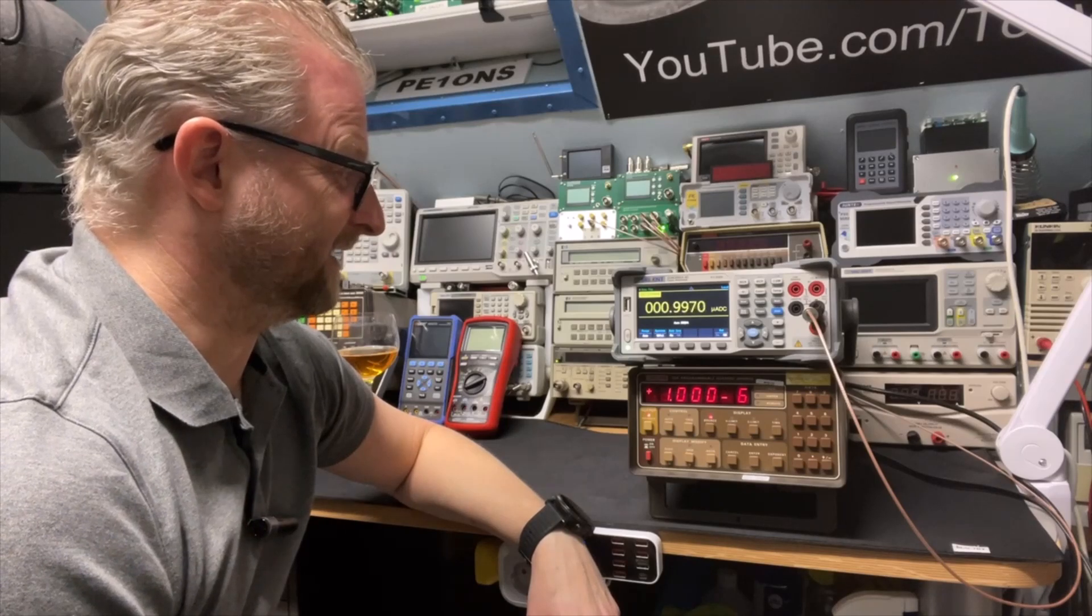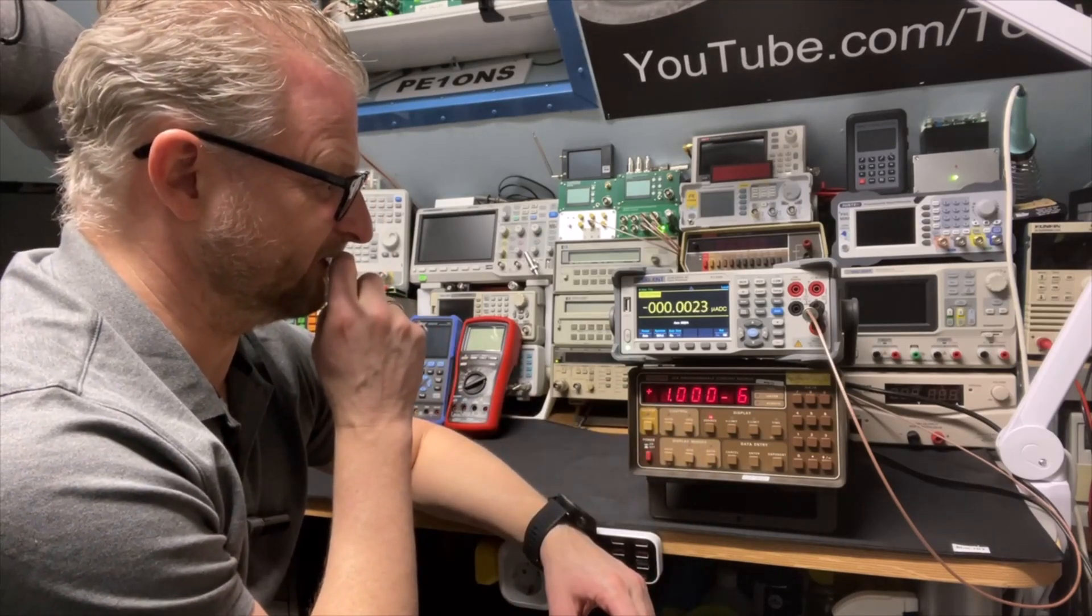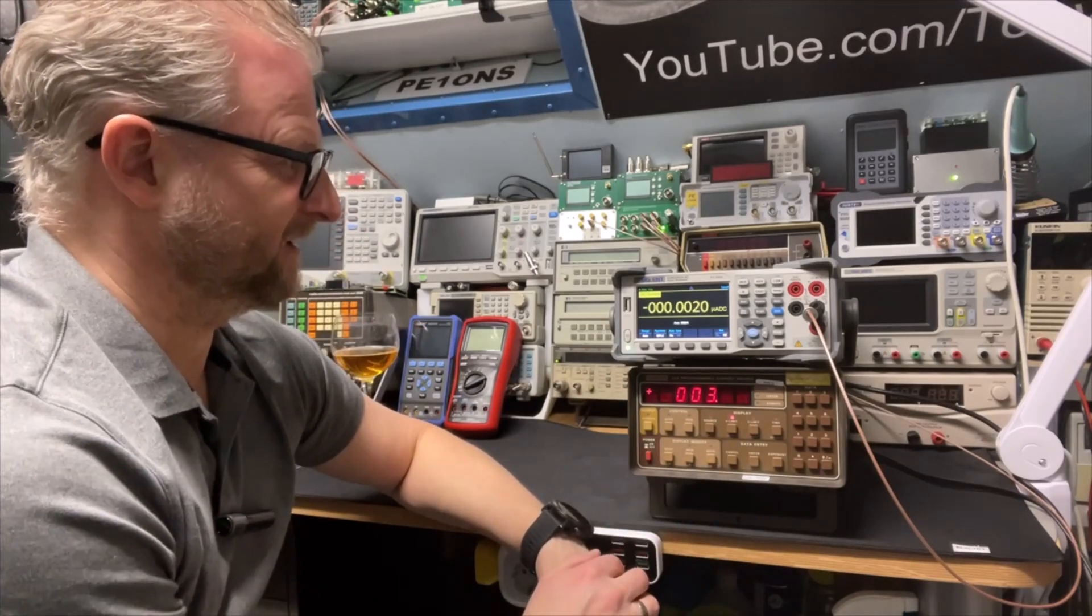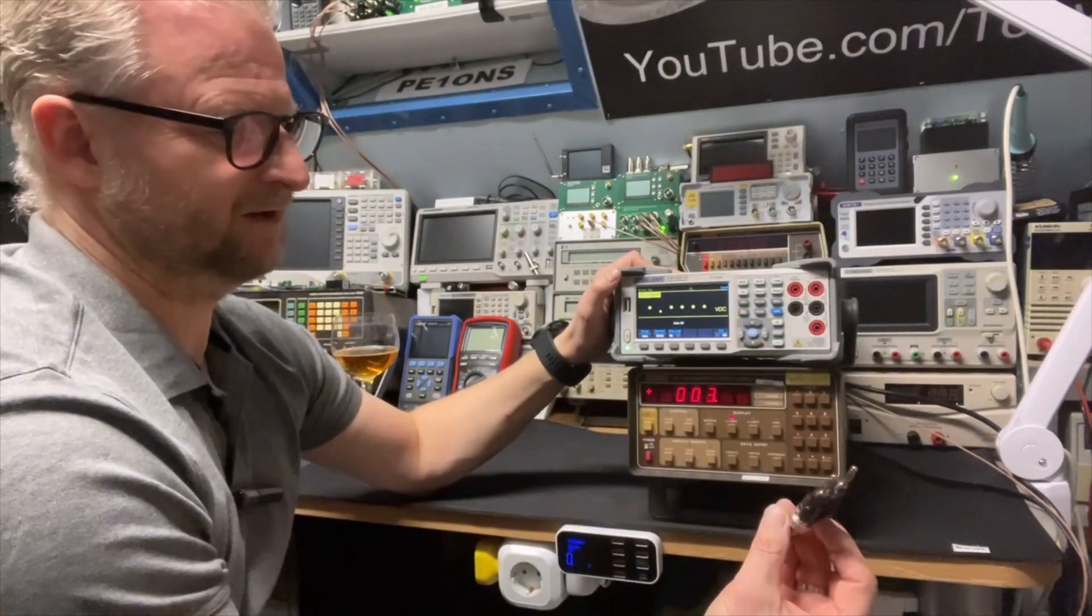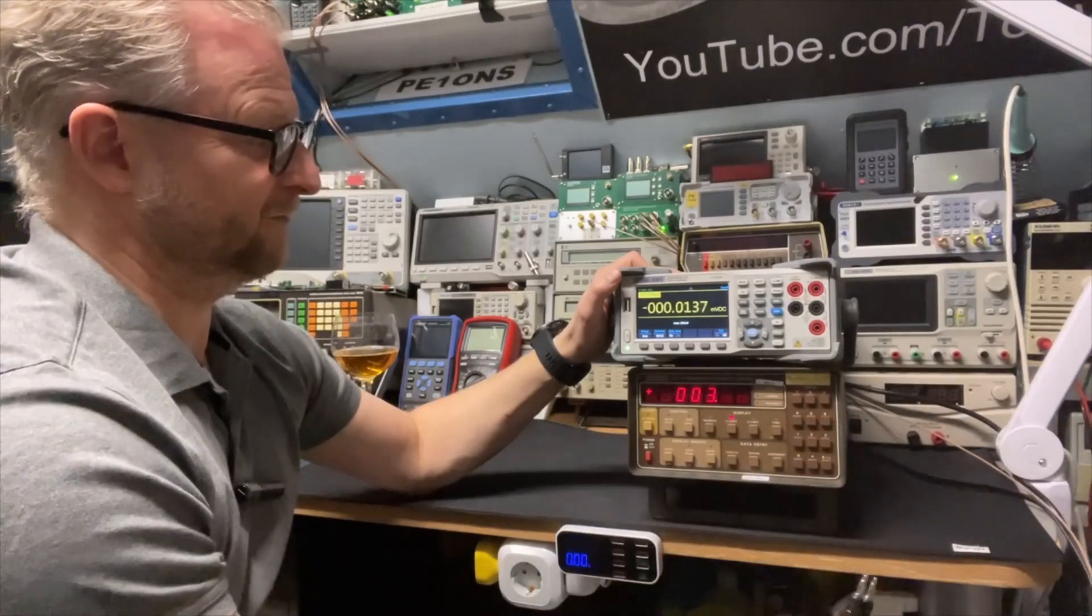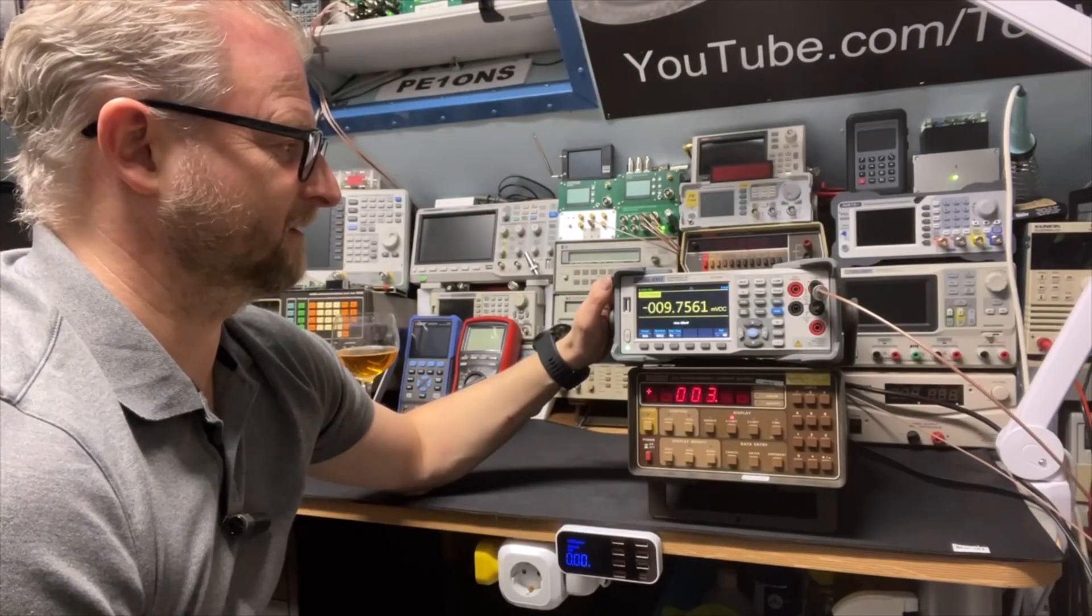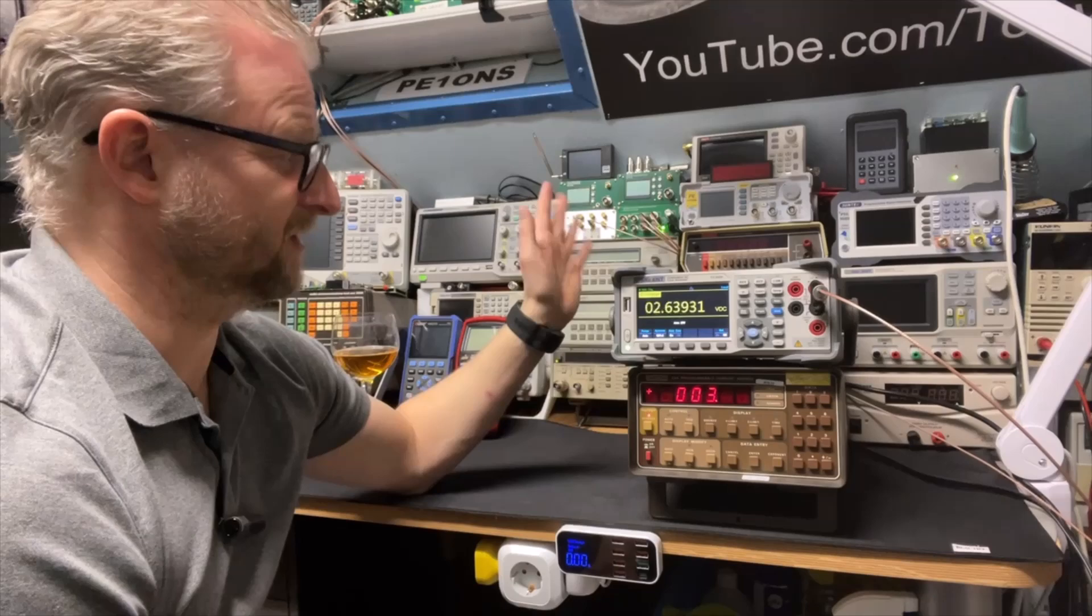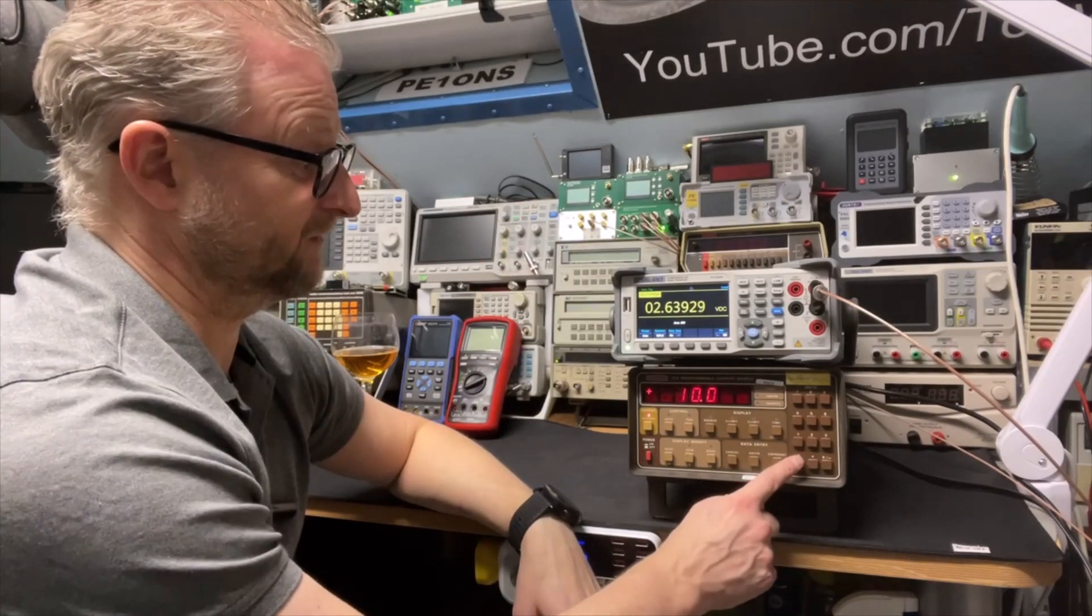This is a lot better than the LBO2. Let's switch it off. I think we should be able to measure the voltage limit. If I switch this to DC volts, it's now open, so it should put this voltage limit.